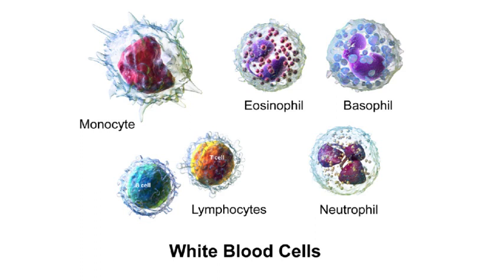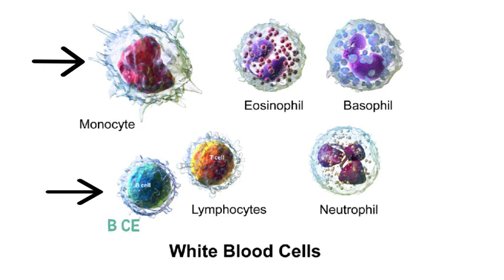White blood cells present in human beings are of five types: Monocytes, Lymphocytes, Eosinophil, Basophil, and Neutrophil. Out of these types, we are going to see the role of Monocytes and Lymphocytes in antibody production. Lymphocytes are of two types: B-cell and T-cell.